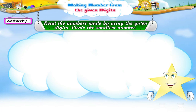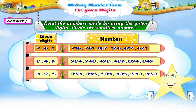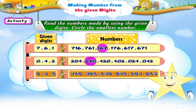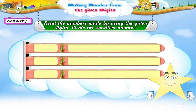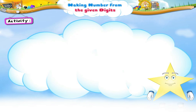Here is another activity, Starry. Read the numbers made by using the given digits and circle the smallest number. In the first set of numbers, the smallest number is one hundred and sixty-seven. In the second set of numbers, the smallest number is two hundred and forty-eight. In the third set of numbers, the smallest number is three hundred and fifty-nine.